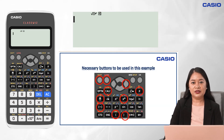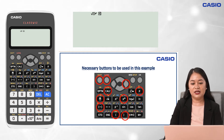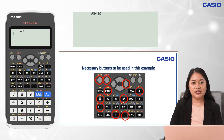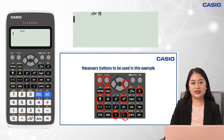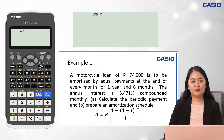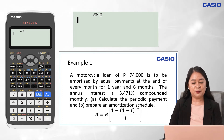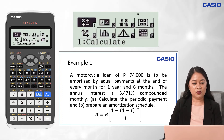Take note that the basic buttons to be used in solving for the periodic payment are: Shift, Alpha, Cal, Right Arrow Key, X, Fraction Key, Exponent, Negative Sign Key, and Open and Close Parentheses Keys. To solve, make sure that your calculator is in the Calculate Menu by pressing Menu 1.